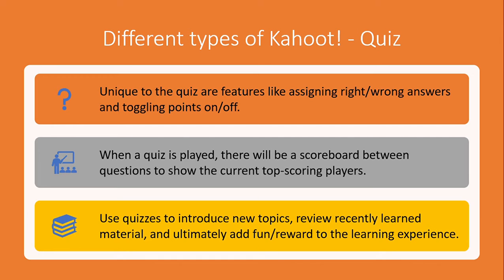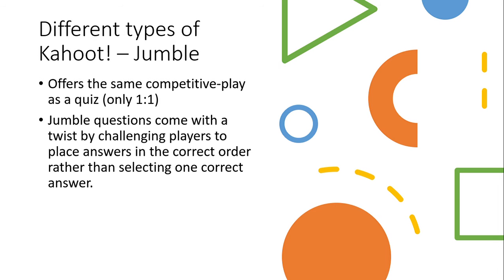There are different types of Kahoot. The first one is a quiz. The quiz features include assigning right or wrong answers and toggling points on and off. When a quiz is played, there will be a scoreboard between questions to show the current top-scoring players. That gets really competitive when students can see who's in the lead. You use quizzes to introduce new topics, review recently learned material, and add a fun and rewarding experience to their learning.